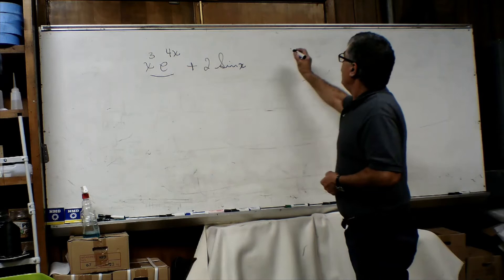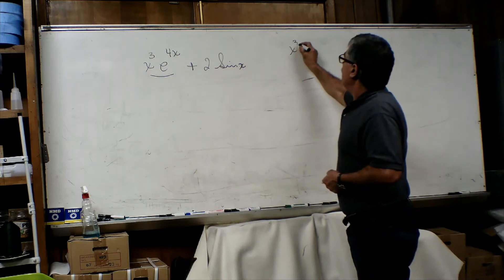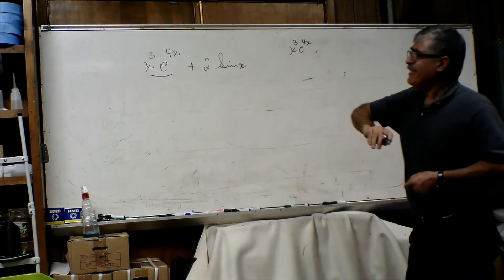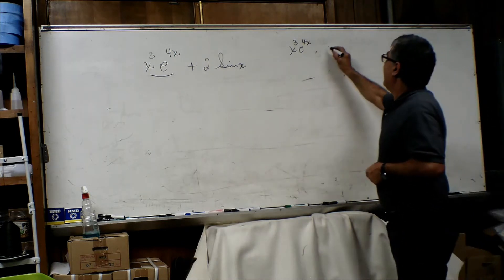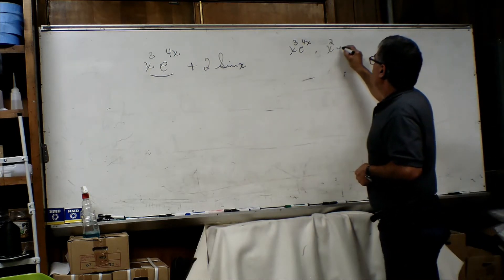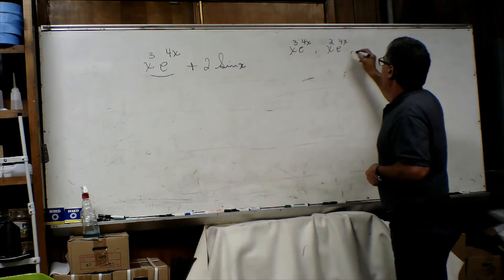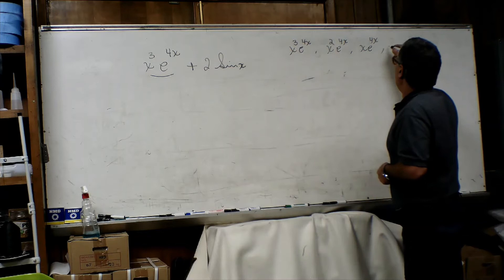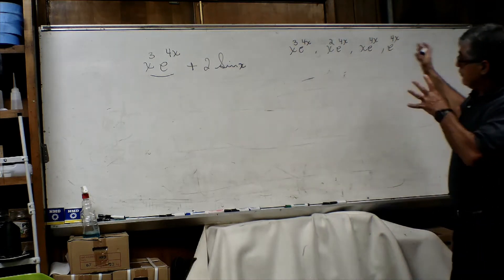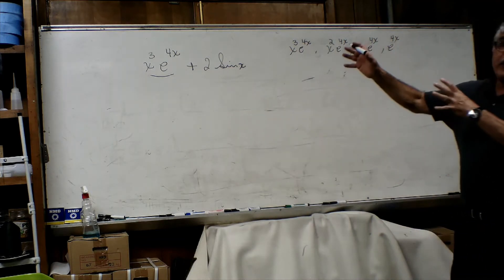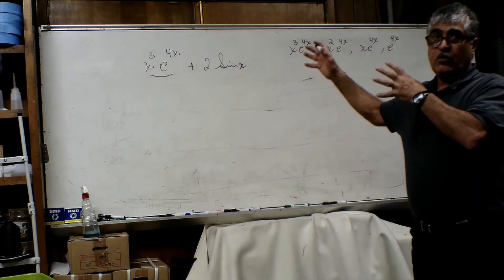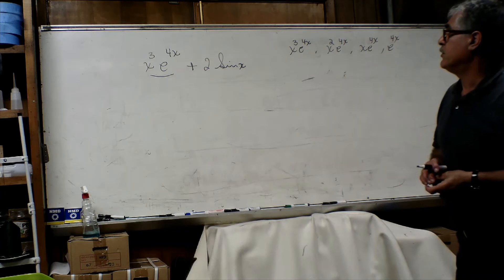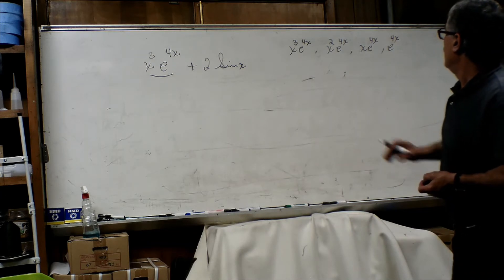So if x cubed e to the power 4x is a solution, then definitely x squared e to the power 4x, and x e to the power 4x, and also e to the power 4x — they must all also be part of the solution for that non-homogeneous differential equation.